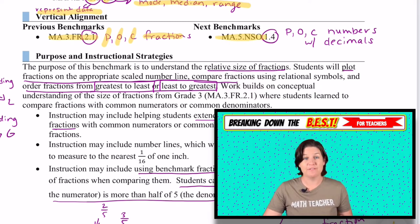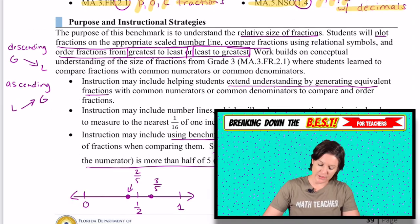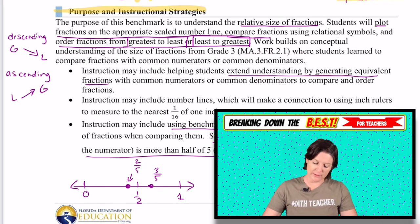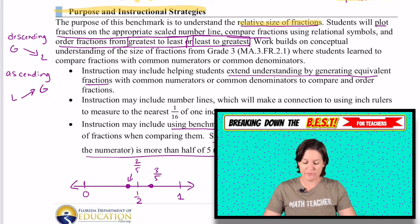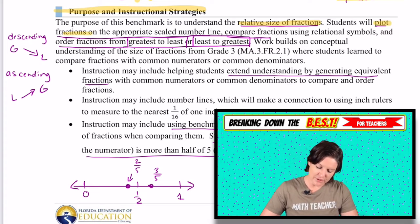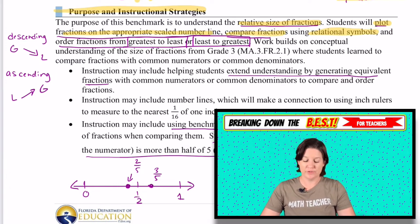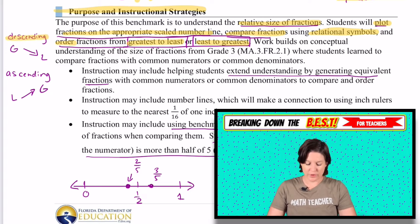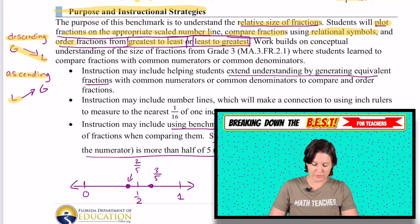And then in fifth grade, we have MA.5.NSO.1.4, where we're plotting, ordering, comparing numbers with decimals. All right, now let's break it down in the purpose and instructional strategy section. This is the purpose of this benchmark is to understand the relative size of fractions. We've had practice with fractions, and now it's time to start thinking about the relative size of these fractions. Students will plot fractions on the appropriate scaled number line and compare fractions using those relational symbols, and then we'll order them. So plot, order, and comparing fractions going from greatest to least or least to greatest. Again, descending order goes from greatest to least. Ascending order goes from least to greatest.